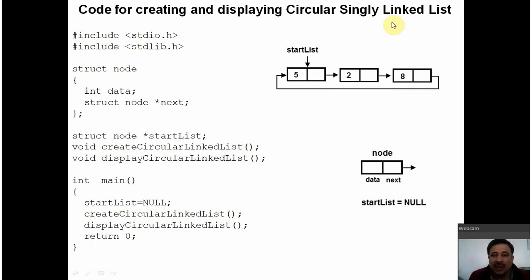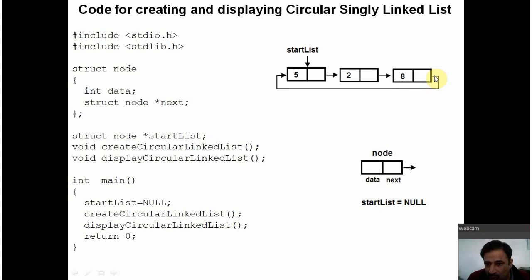The only difference between a single linked list and the circular single linked list is that the pointer of the last node will again point to the first node. So, let us start understanding this program.